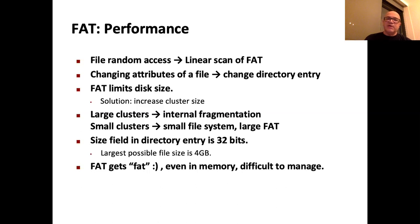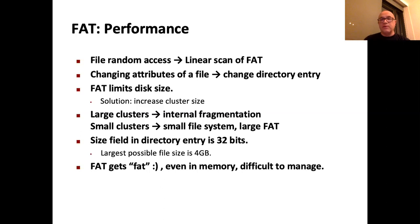In FAT32, we can have up to 256 million entries, each four bytes, resulting in a potentially one-gigabyte FAT—very large. Because the size field in the directory entry is 32 bits, the largest possible file size is four gigabytes regardless of cluster or volume size. So for example, an HD movie will not fit on FAT. There is a joke: FAT gets FAT. Even in memory, it can be very difficult to manage.